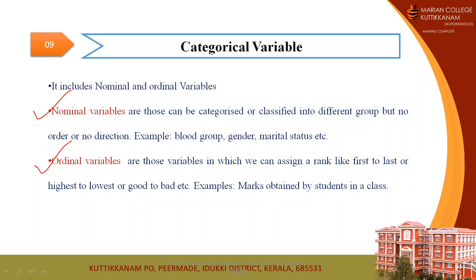For ordinal variable, suppose you want to express the marks obtained by students in a class — these can be ordered from highest to lowest or from good to average. In ordinal variables, ranking is possible, either in ascending or descending order. The basic difference is that in nominal variables, classification is possible but there is no order, whereas in ordinal variables we can classify based on rank — from highest to lowest or from good to bad. For example, with three books A, B, and C, respondents can rank them, assigning rank 1 to book B and rank 3 to book C.